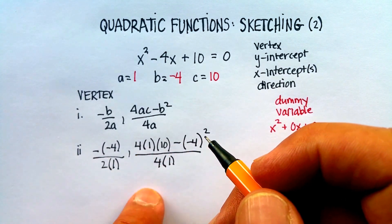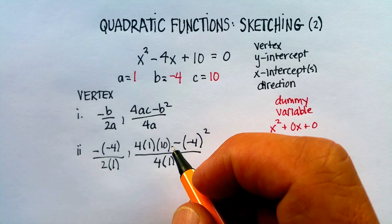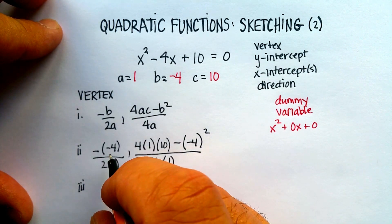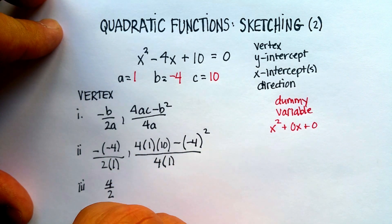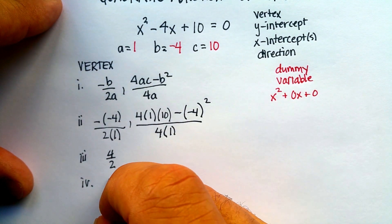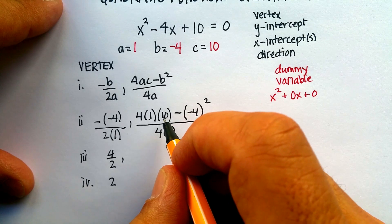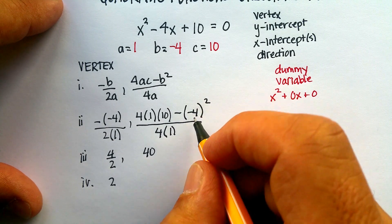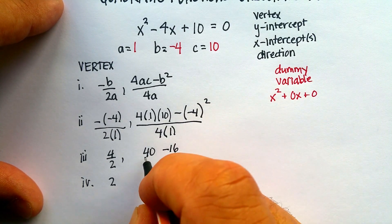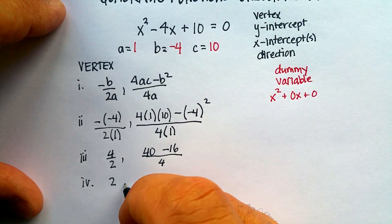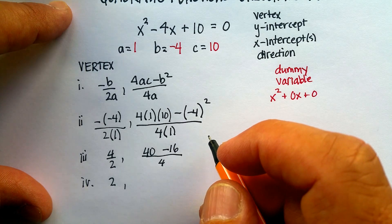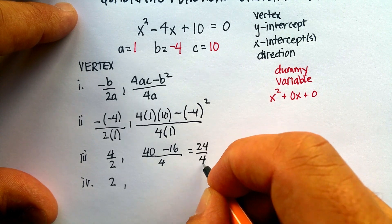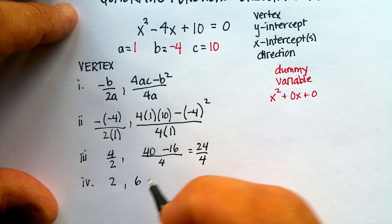Step 3, let's simplify. Negative of negative 4 is positive 4 over 2, which is just 2. 4 times 10 is 40. Negative 4 squared is 16. So it's 40 minus 16 over 4. 40 minus 16 is 24 over 4, and 24 over 4 is just 6.